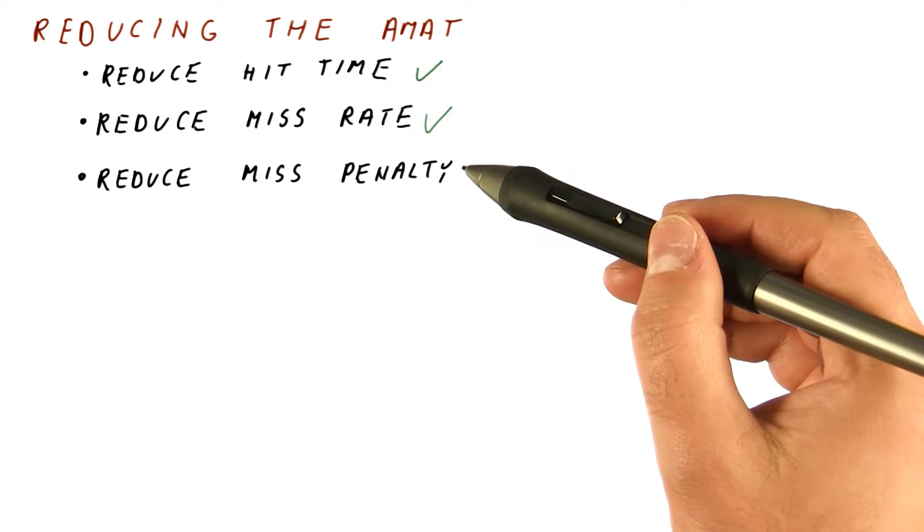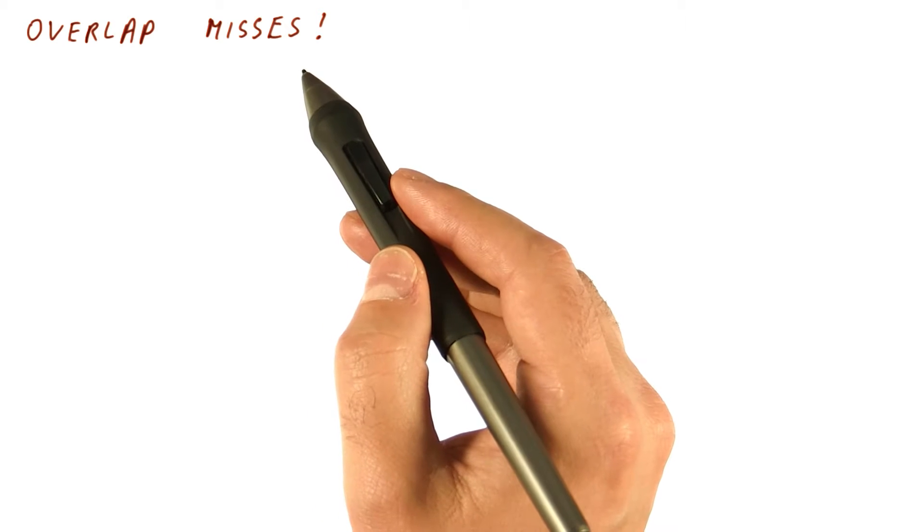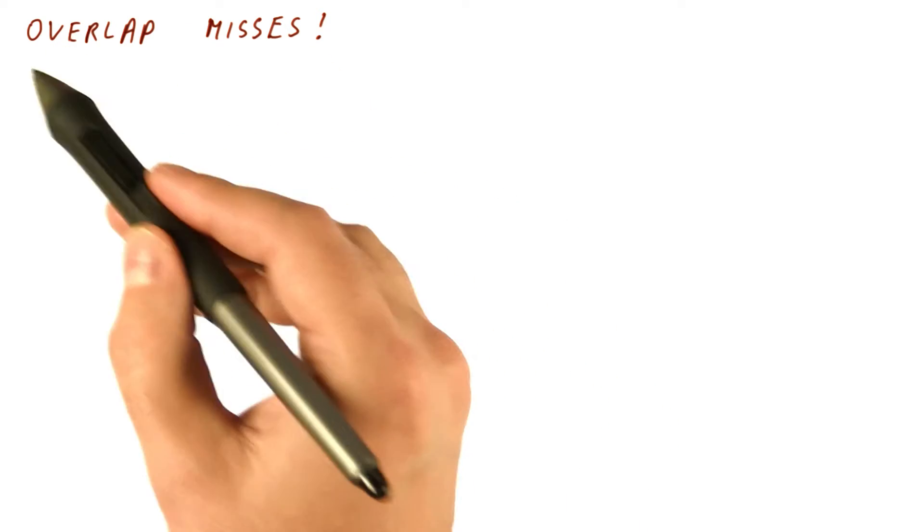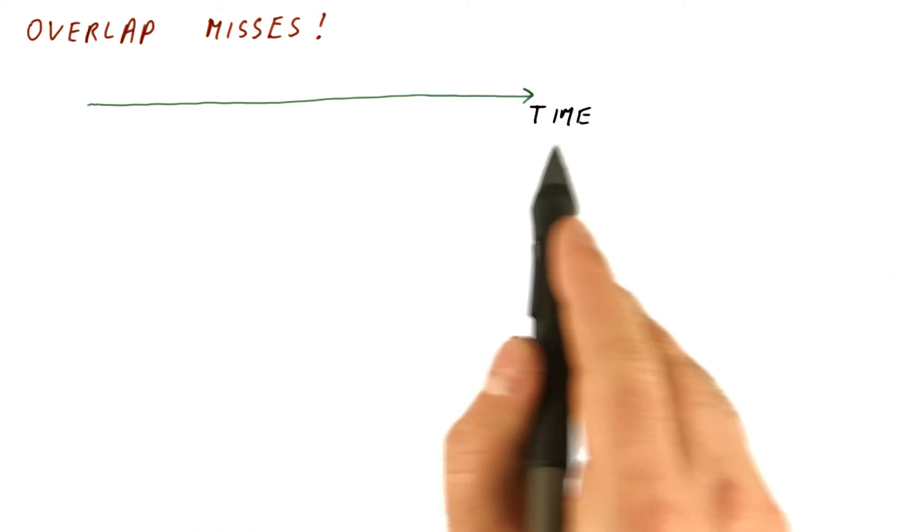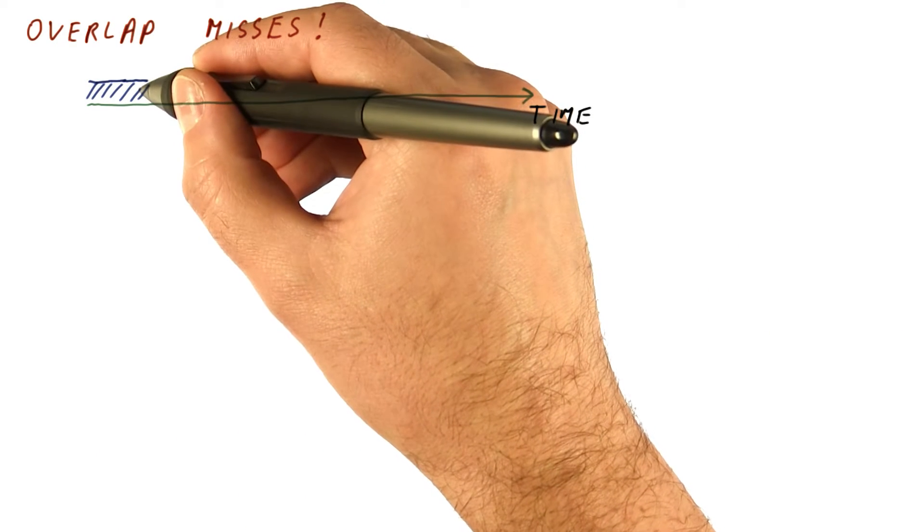So when we miss, we don't suffer as much as before. The first technique for reducing the miss penalty is to overlap multiple misses. If time goes in this direction, our processor does a lot of activity, multiple instructions per cycle.